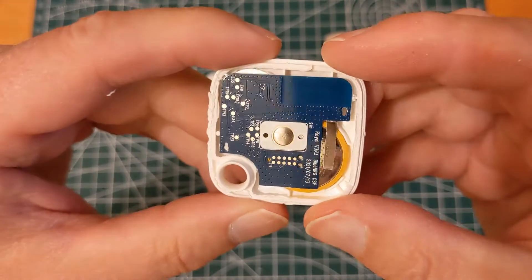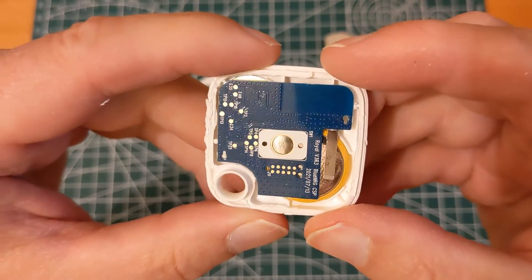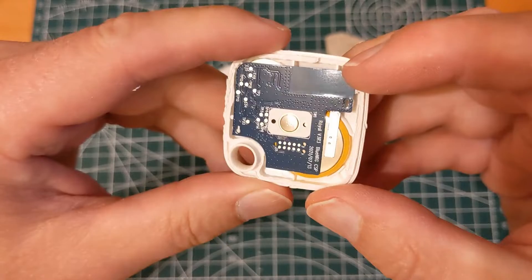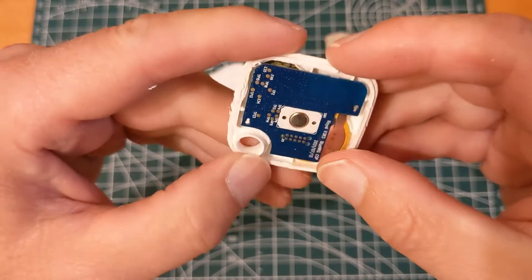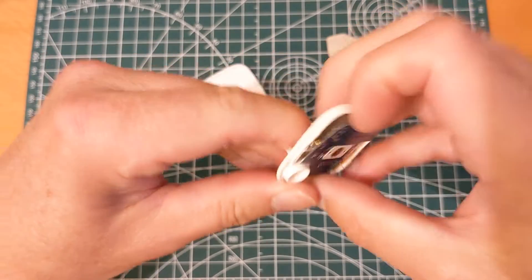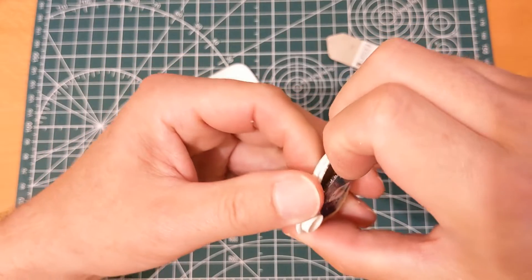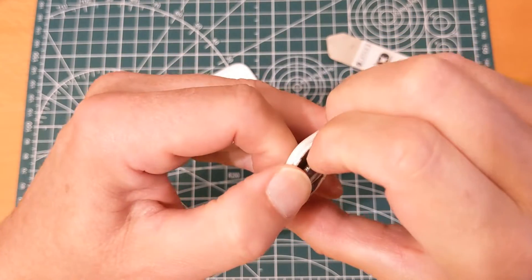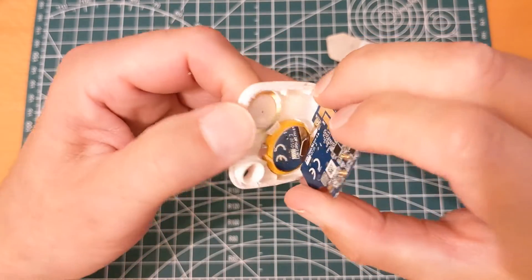Right, so there we are. This really is a big Clive video this one, isn't it? There we are, I'm going to reverse engineer this. I'm not really, because I've no idea what I'm talking about, but in theory you could, rather than buy a replacement from Tile when the battery runs out, you could get in here and replace the battery.